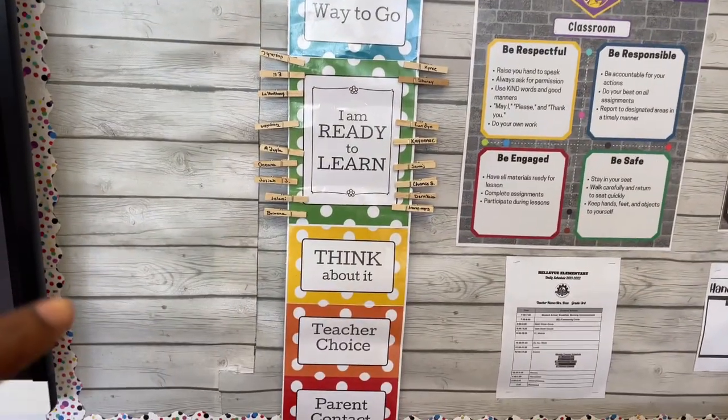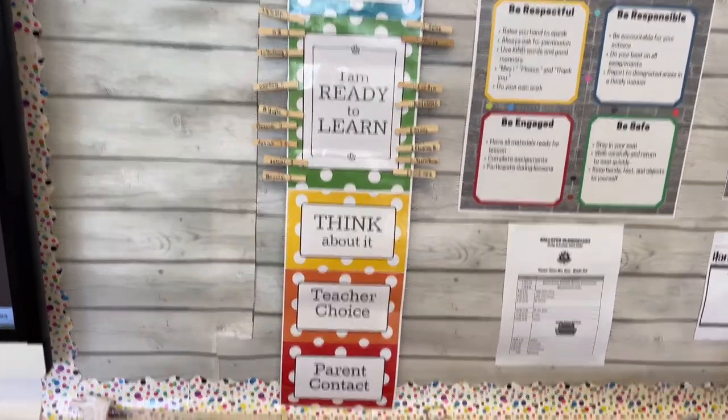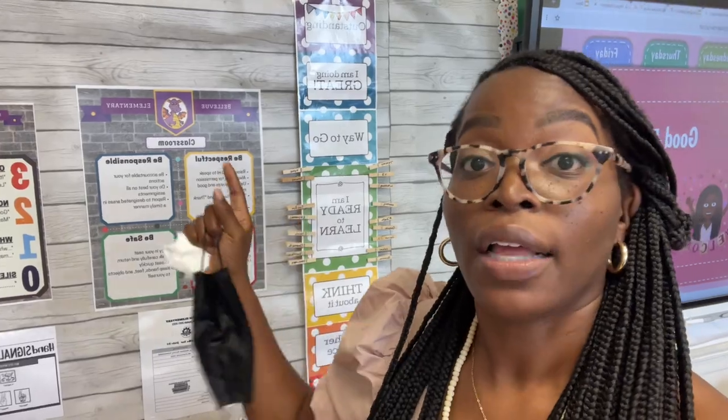Once they're bumped down, first we have 'got to think about it' — that's your warning. After that, they'll go down to teacher choice: it might be silent lunch, restrictive recess, or time out in our classroom or in another classroom. And if I have to keep talking to you, then you go to a parent contact where I call parents or send a note home. This behavior chart works hand in hand with the behavioral calendar I showed you earlier, so depending on what color they have they'll color their calendar so their parent knows how they did for the day.